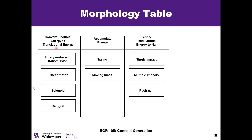Here we have our energy. We're going to convert it into different types of translational motion. Options include a rotary motor with a transmission, a linear motor, a solenoid, or a rail gun. We're going to accumulate this energy with a spring or maybe a moving mass. Then we want to apply it — we could do a single impact by pounding it in once, hammer it in multiple times, or just push and continuously drive the nail in.